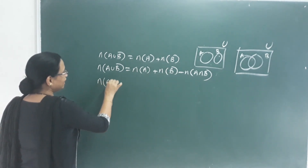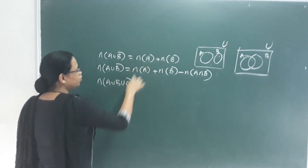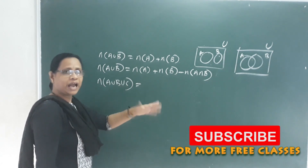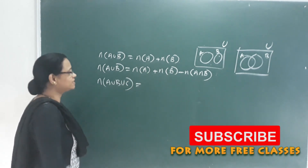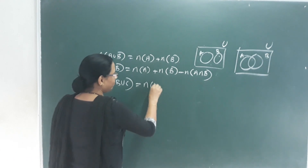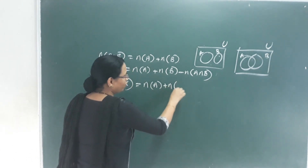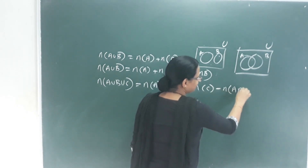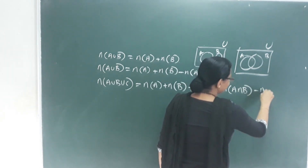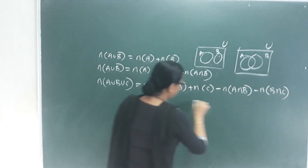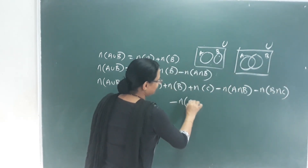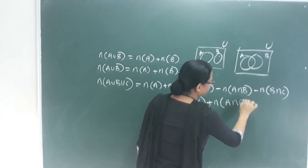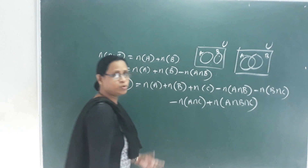For three sets, the number of A union B union C equals the number of A plus the number of B plus the number of C, minus the number of A intersection B, minus the number of B intersection C, minus the number of A intersection C, plus the number of A intersection B intersection C.